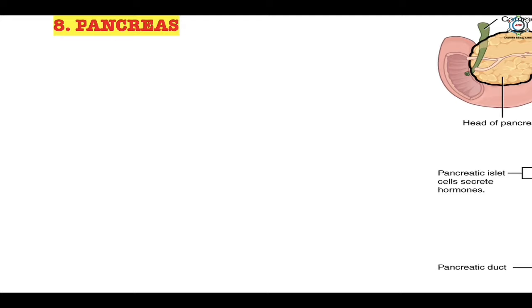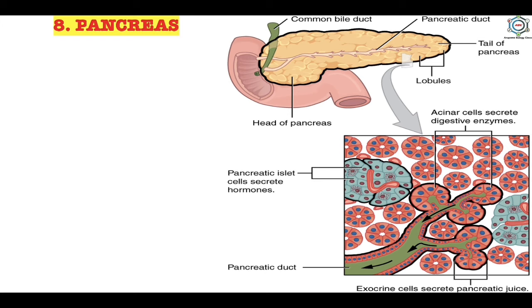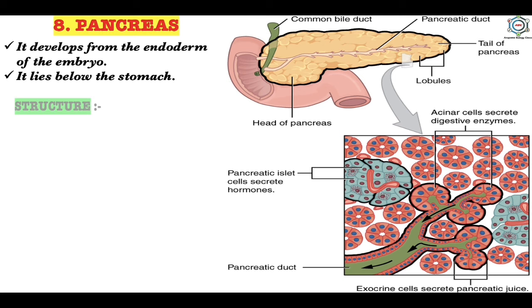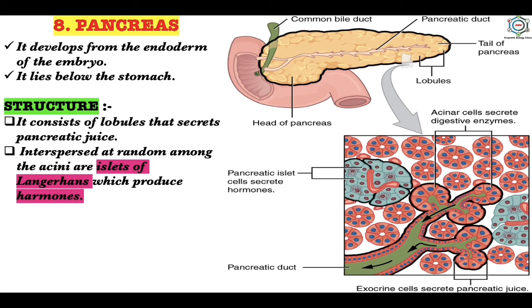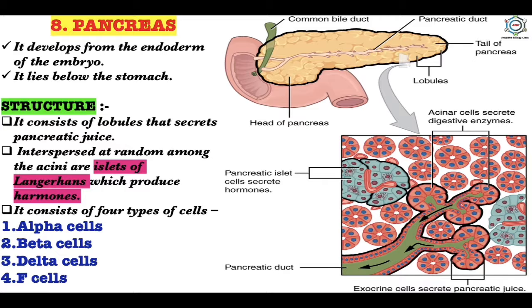The eighth endocrine gland is the pancreas. It develops from the endoderm of the embryo and lies below the stomach. Its lobules secrete pancreatic juice. Interspersed among the acini are islets of Langerhans, which produce hormones. The islets of Langerhans have four types of cells: alpha cells, beta cells, delta cells, and F cells.